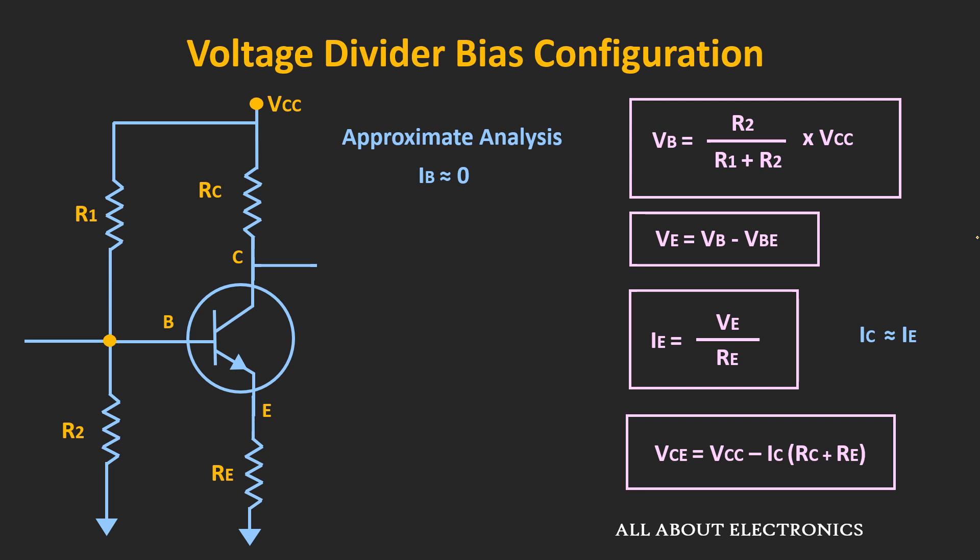That means if we can use this approximate analysis method for this voltage divider biasing configuration, then the operating point is independent of the variation in β. Now let's understand under which condition we can use this approximate analysis. For that, let's do the exact DC analysis of the given circuit.